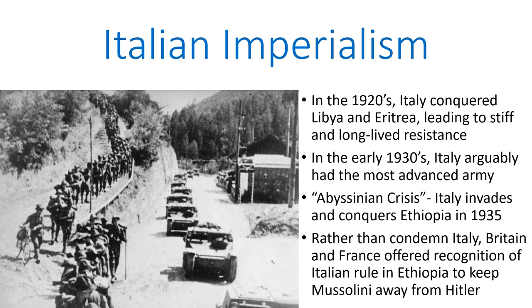The so-called Abyssinian crisis is when Italy invaded and conquered Ethiopia in 1935, to the outrage of the global community. However, the two leaders in the League of Nations who might be expected to speak up against Mussolini — Britain and France — instead decided that a more worthwhile objective was to try to keep Mussolini away from Hitler. So they tried to win his friendship by offering to recognize Italian rule in Ethiopia and simply ignore his aggression in that region. Of course, this was not successful and Mussolini still ended up in Hitler's orbit anyway. All Britain and France ended up achieving was to further undermine the legitimacy of the League of Nations in the eyes of many of its constituent members.